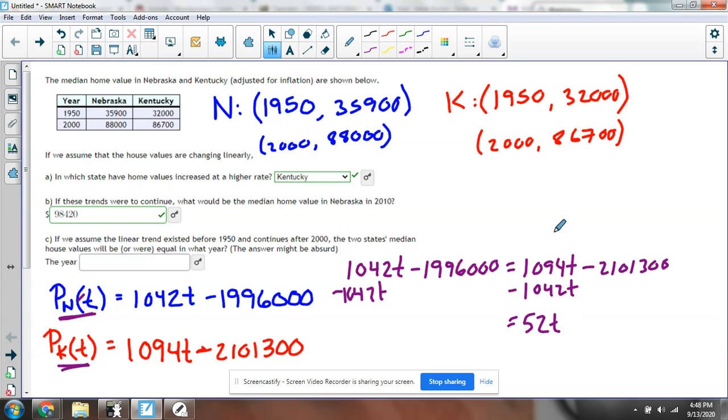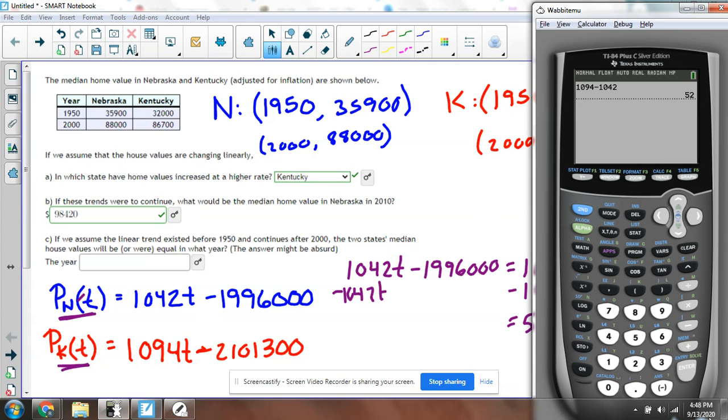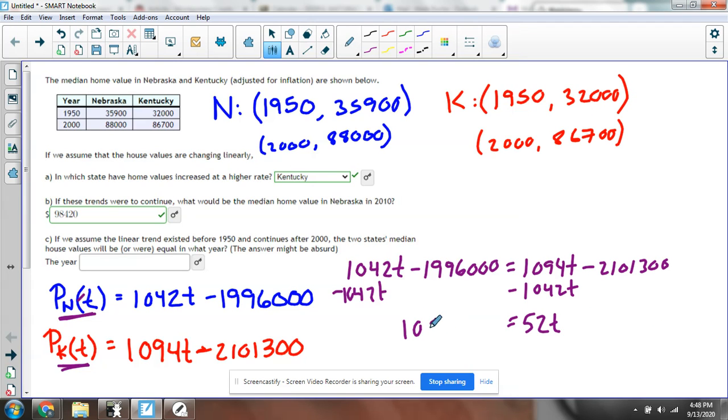To save space, I'm going to do this in one step. I'm going to add this number to both sides: -1,996,000 + 2,101,300. On the left-hand side I get 105,300.